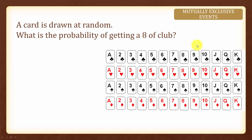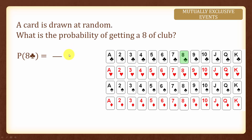If a card is drawn at random from this deck, what is the probability of getting an ace of clubs? There is only one ace of clubs and there are 52 cards. Therefore, the probability of getting an ace of clubs will be 1 over 52.